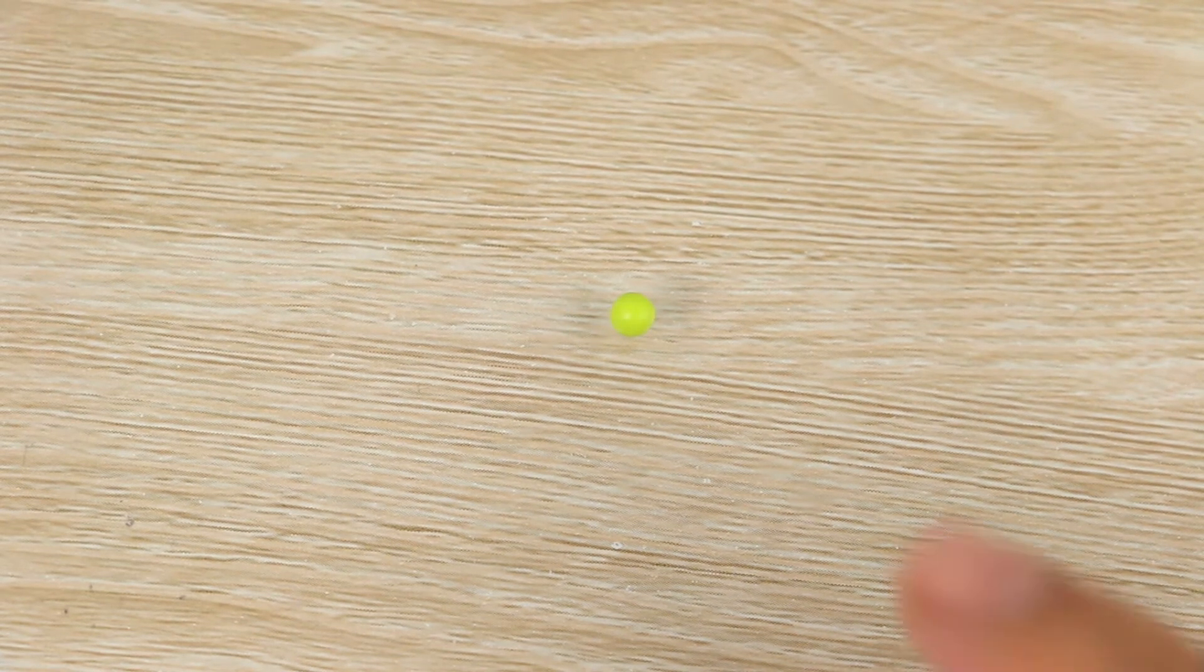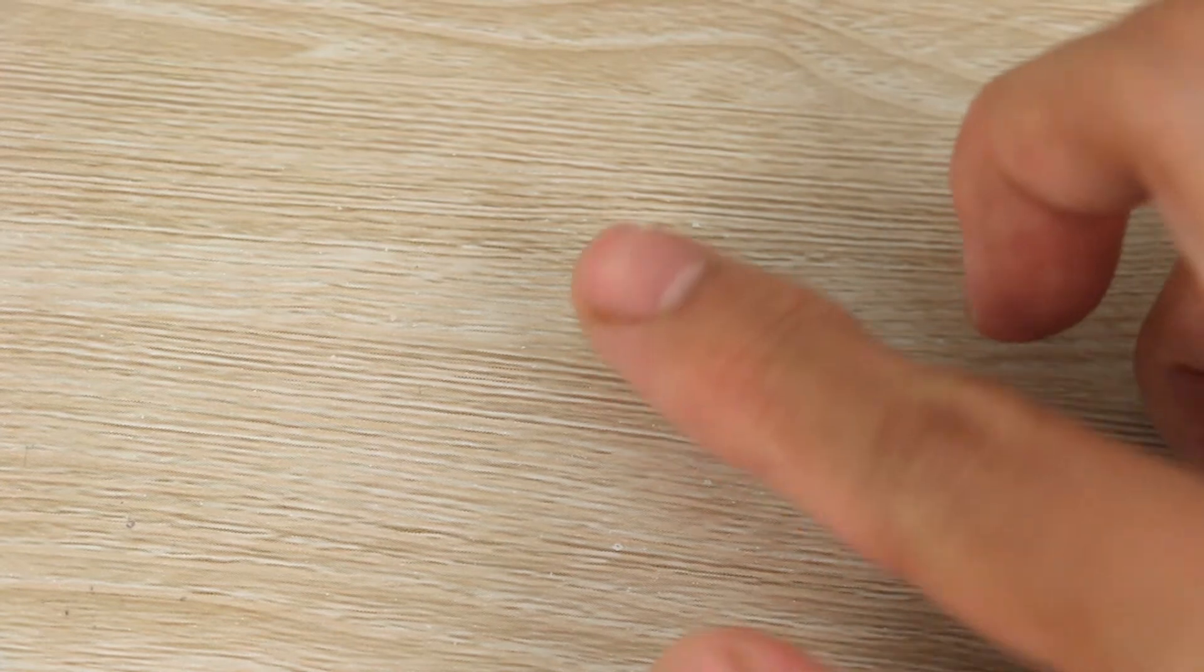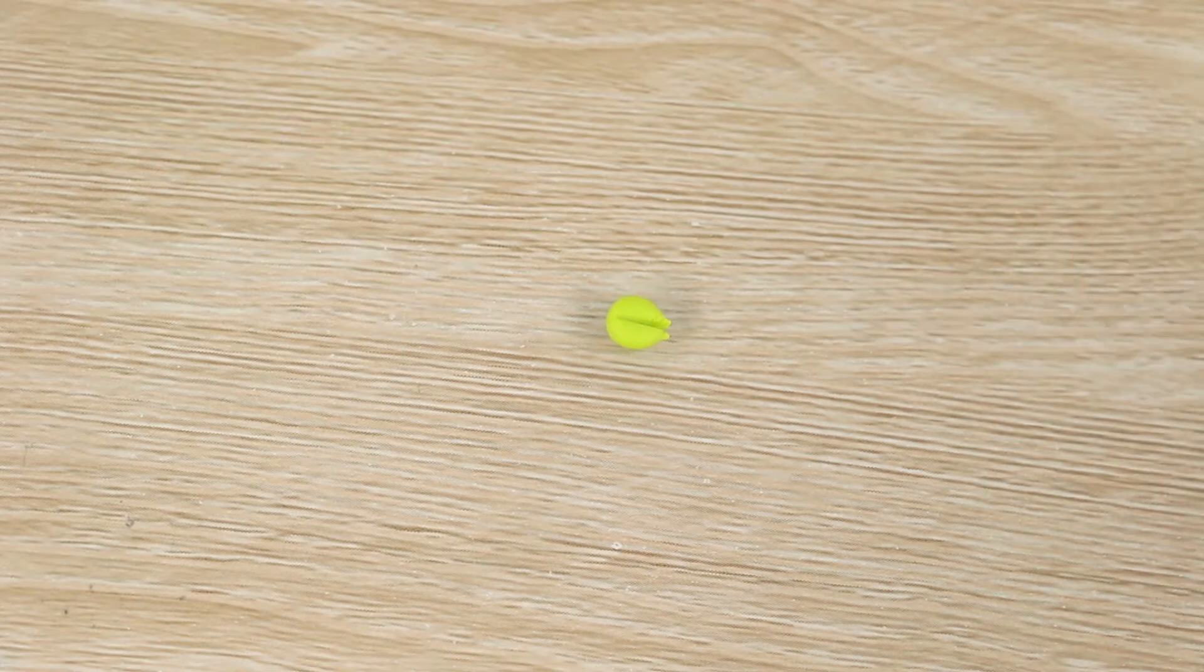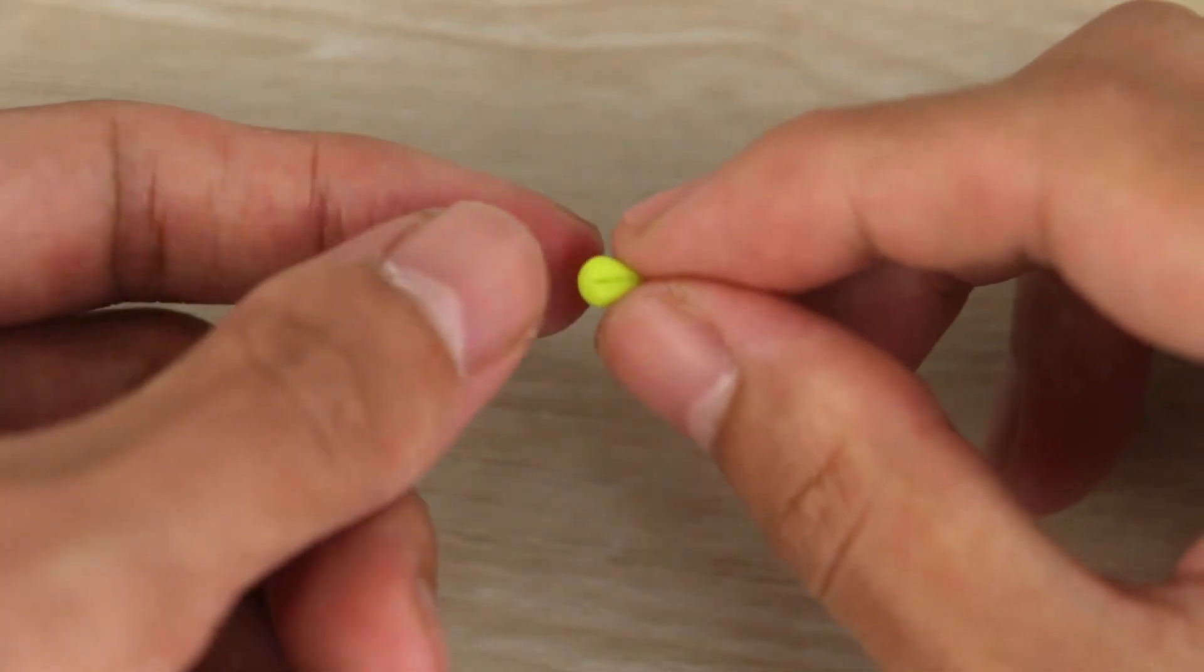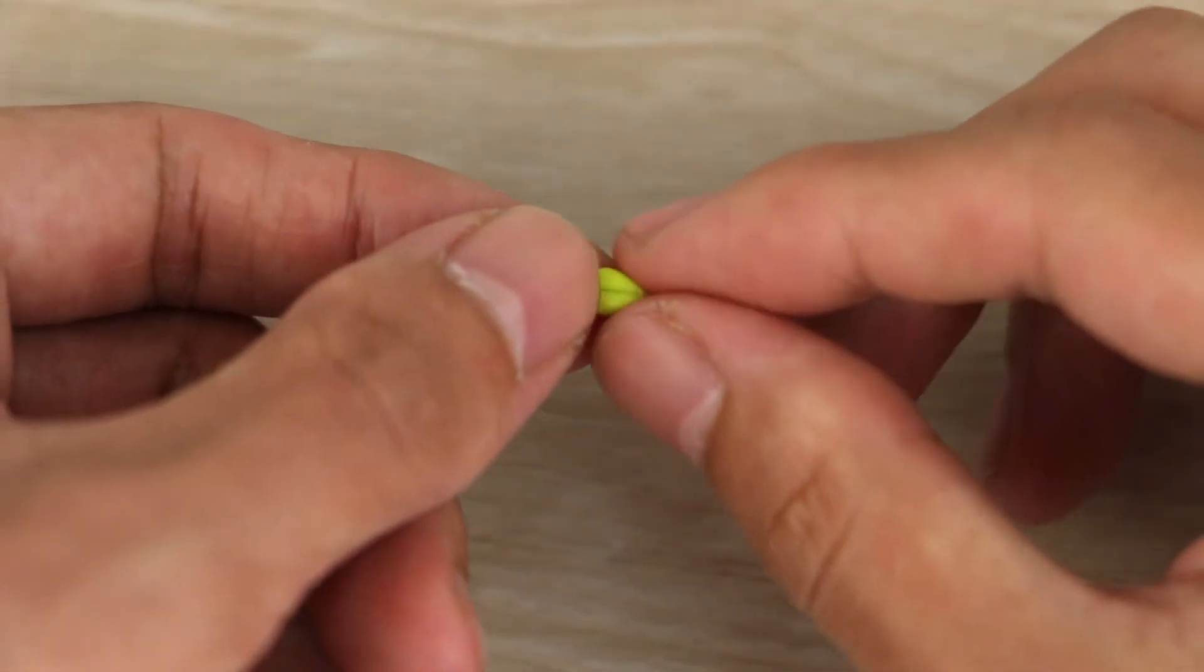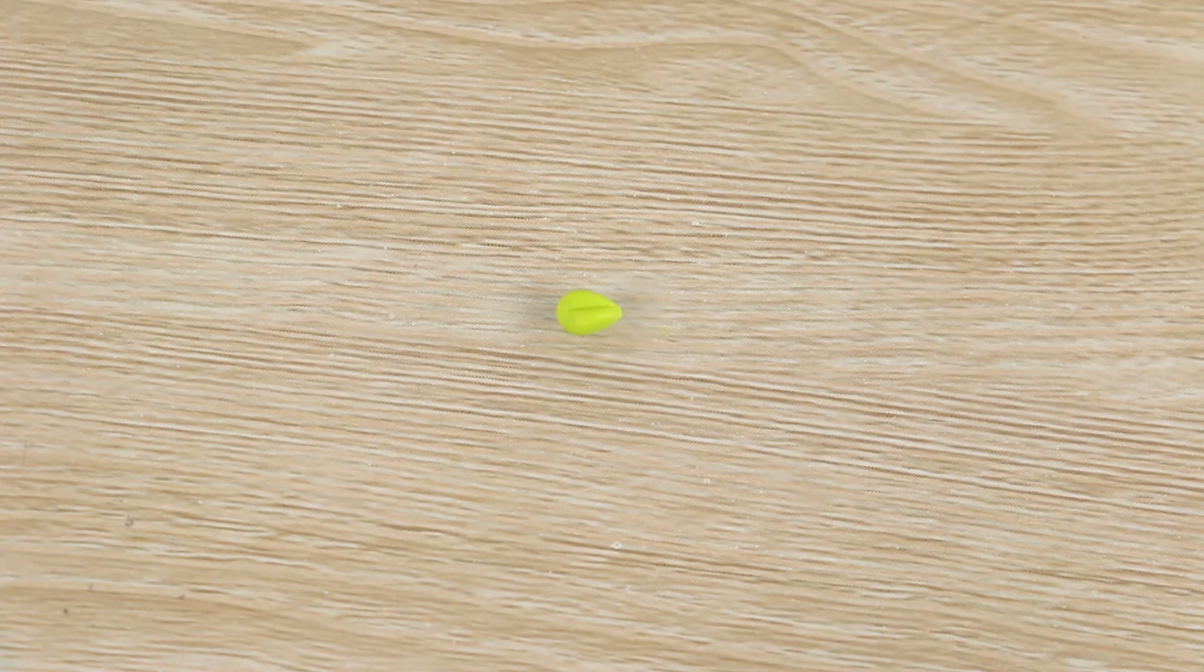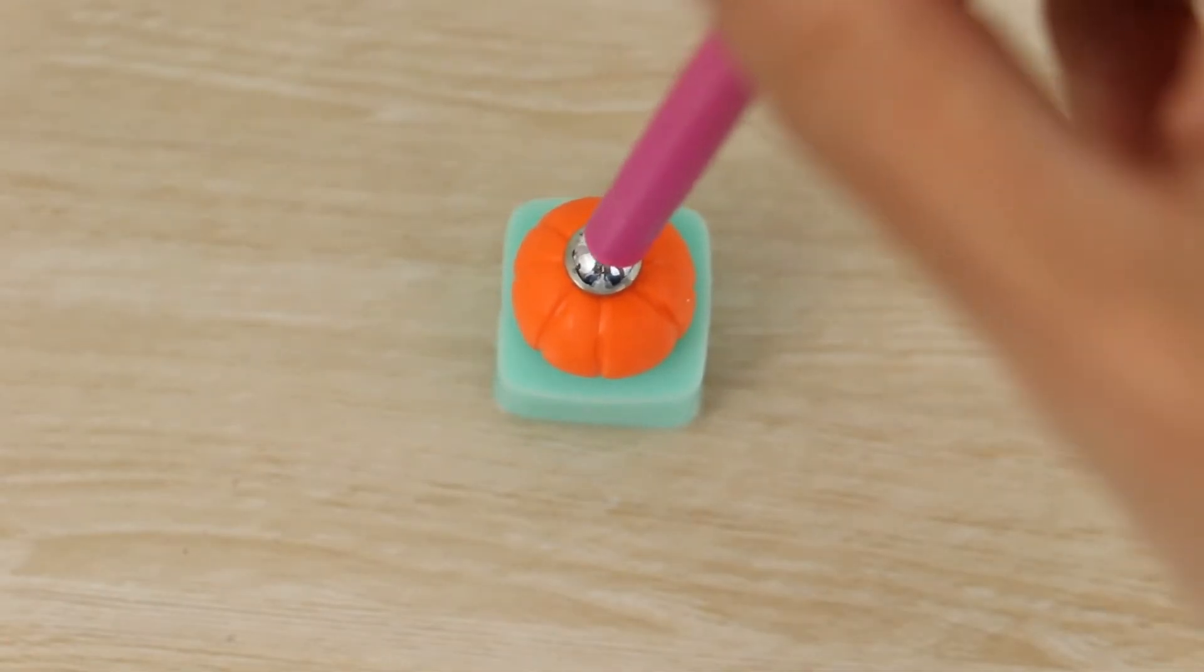To make a leaf I'm flattening a small green ball into a disc and creating a line down the middle with my needle tool, and then finally pinching one end to a point so it becomes a leaf. Next with a ball tool I'm pressing a little indent into the top of the pumpkin and then adding on the stem and leaf.